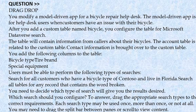Users must be able to perform the following types of searches: search for all customers who have a bicycle type of Contoso and live in Florida; search for all tables for any record that contains the word 'broken.' You need to decide which type of search will give the desired result. Which search should you configure? Drag the appropriate search types to the correct requirements. Each search type may be used once, more than once, or not at all.